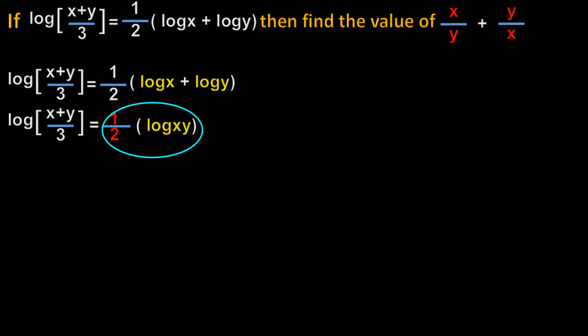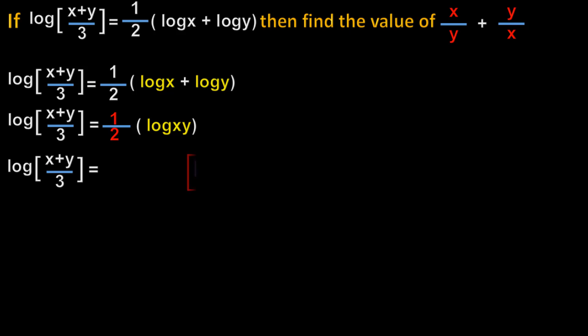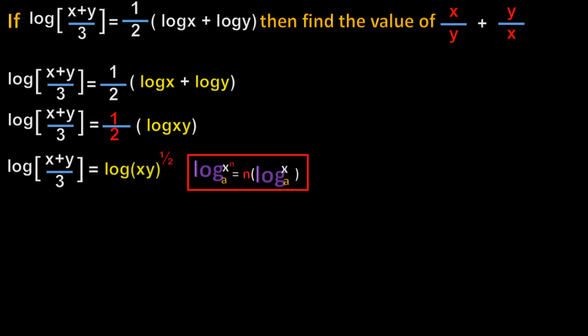That is, it looks like n times log x to base a, where n = 1/2, x = xy, and base a = 10. So here we can apply the power rule: log x^n to base a equals n times log x to base a. By applying it on the right hand side, the 1/2 becomes the power of xy. So we get log (xy)^(1/2).